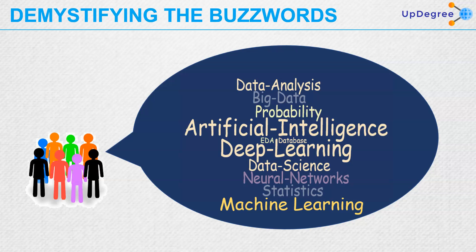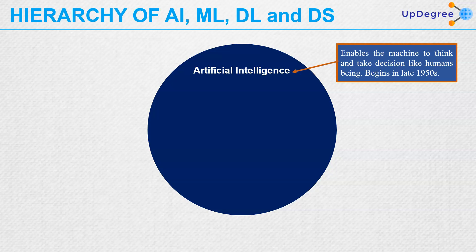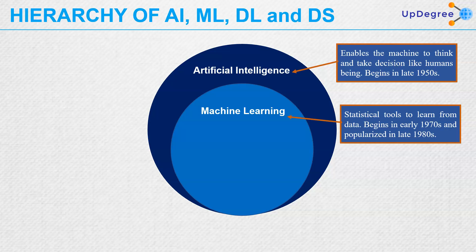We will be trying to demystify these buzzwords. Artificial intelligence enables the machine to think and take decisions like humans. It begins in the late 1950s. Machine learning we can think of as a subset of artificial intelligence, which is nothing but a collection of statistical tools to learn from data. It begins in early 1970s and was popularized in late 1980s.